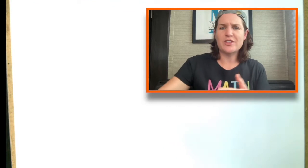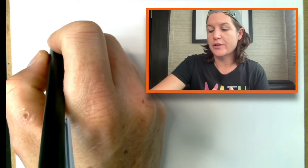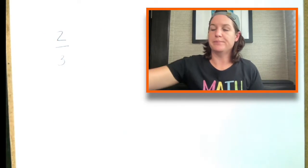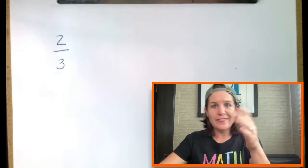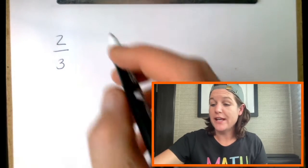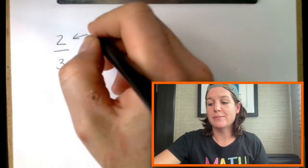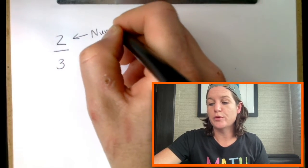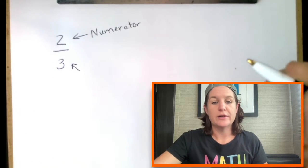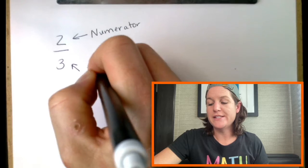So, without further ado, let's jump into today's episode. Let's go ahead and break down the parts of a fraction. So, let's say that you had the fraction two-thirds with a two on top and a three on the bottom, only we don't call it the top and the bottom. The top and the bottom of a fraction have a specific name.